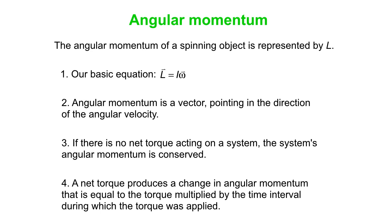If you watched our momentum video, you would have seen a similar screen where momentum of a moving object is represented by P, and our basic equation is P equals mv. Momentum is a vector pointing in the direction of the velocity. If there is no net force acting on a system, the system's momentum is conserved. A net force produces a change in momentum equal to the force multiplied by the time interval during which it was applied. So there is just an analogous set of statements for angular momentum as there were for linear momentum.